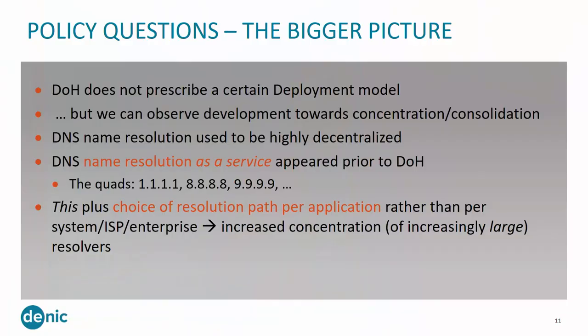That is not necessarily completely new because we already saw emerging big resolver providers like Quad 8, Quad 9, Quad 1 — but now this goes nicely together. This name resolution as a service did exist, but together with the browser vendors that help add customers, and adding this resolver choice per application rather than per operating system, that's really accelerating the concentration and giving the resolver operators a certain power they didn't have before. The DNS resolution was highly decentralized — there was no association of all the resolver providers in the world. In hindsight, that probably was a good thing.